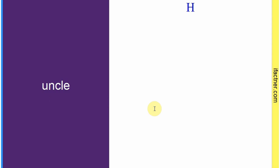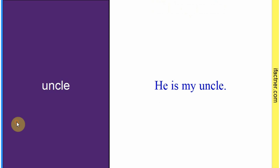Word hai: 'uncle'. Sentence banaate hain: 'He is my uncle.' Woh mere uncle hain, woh mere maamoo hain, woh mere chacha hain. Toh 'uncle' — maamoo, chacha, ya koi bhi uncle ho — isko keh sakte hain. Sentence banaaya: 'He is my uncle.'